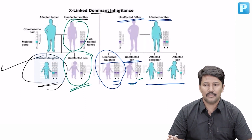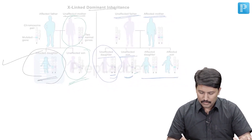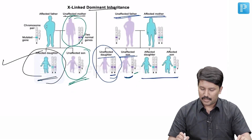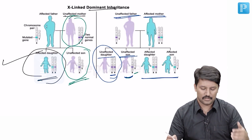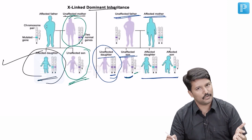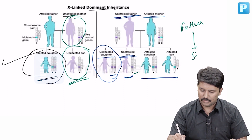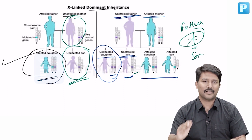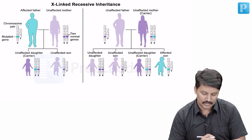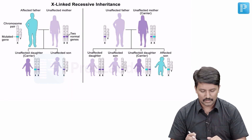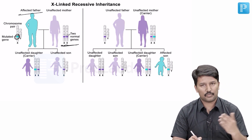Both son and daughter can be affected or unaffected — all these are possibilities. The same rule holds good: you cannot notice father-to-son transmission in either circumstance, whether the father is affected or the mother is affected. So this rule of no father-to-son transmission holds good, and that is a key pointer for X-linked inheritance. Now looking at X-linked recessive inheritance, let us take a hypothetical situation: we have an affected father who has a mutated gene on his X chromosome and a mother with two normal genes.